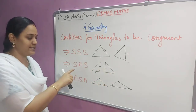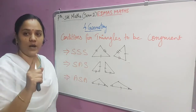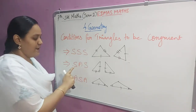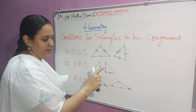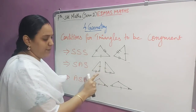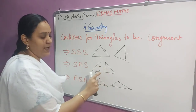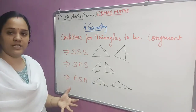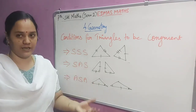Next is SAS. Two sides and one included angle are equal. Here this side and this side are equal — double line sides are equal — and one angle is equal. So this condition is said to be the SAS condition.